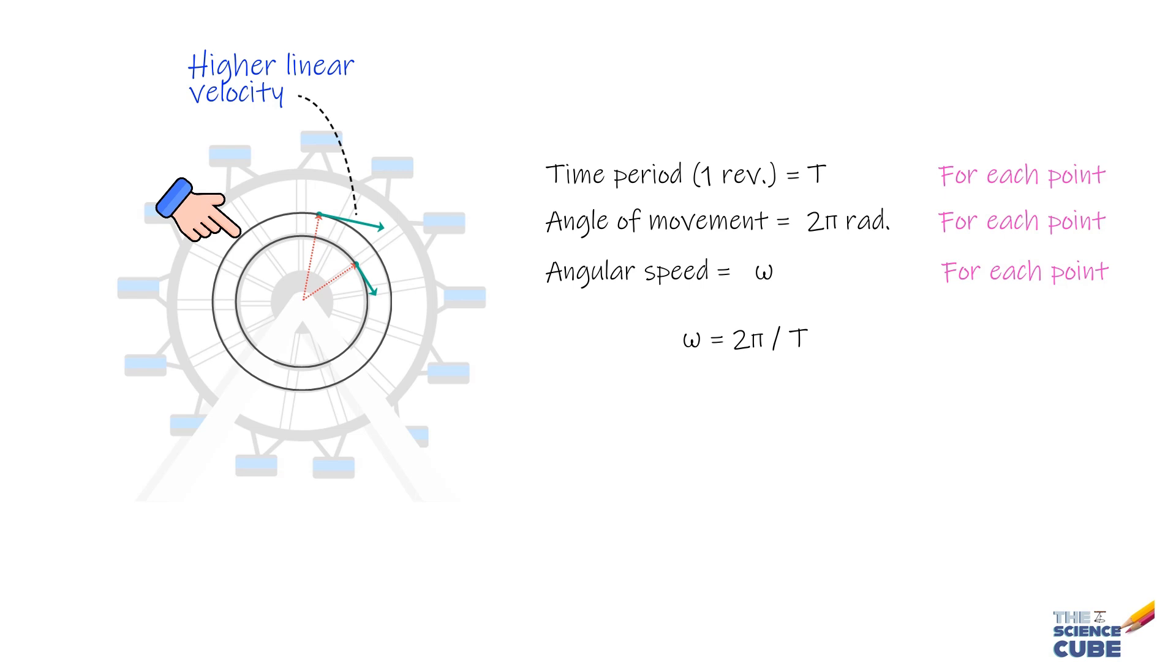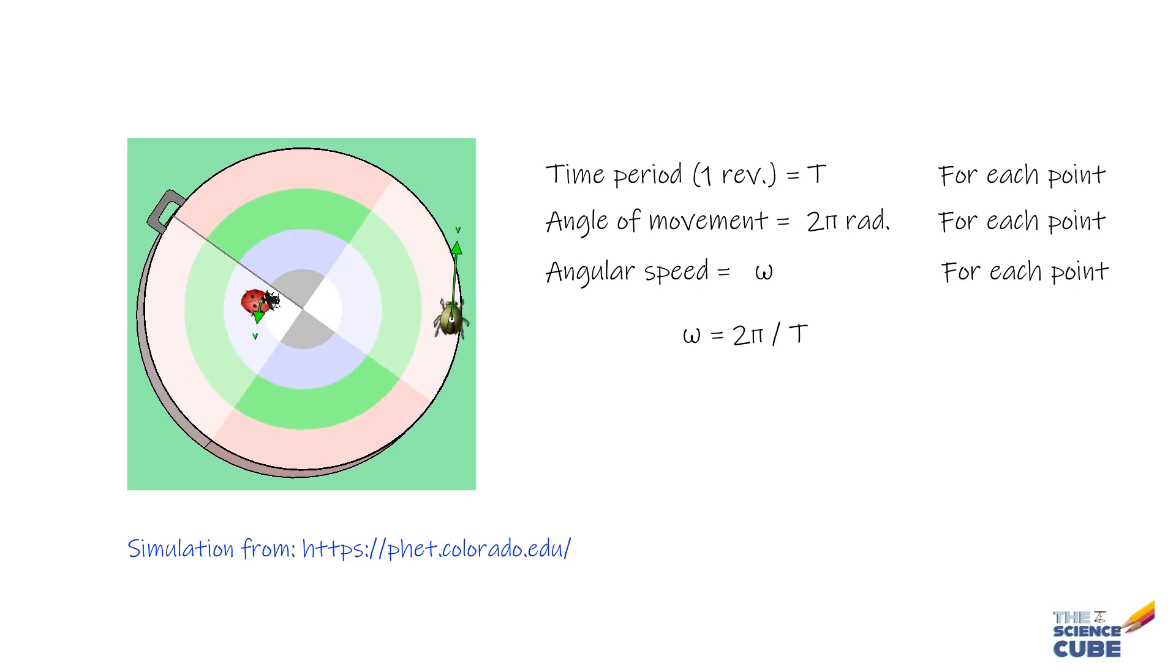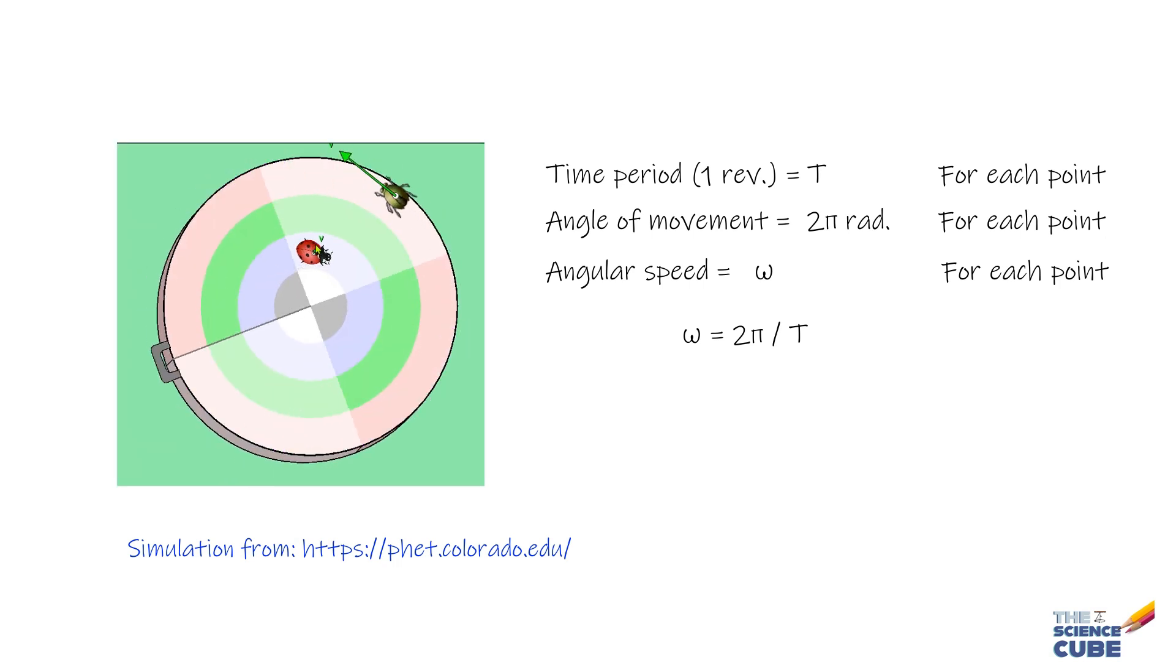Let us take another example where we take these two beetles. You can clearly see that this guy needs to move a longer distance in the same time as this one, and therefore it needs to have a higher linear speed to cover this distance. If you start pushing this one towards this guy, you will see its linear velocity starts increasing. And when it is at the same radius as this, they both have the same linear velocity.